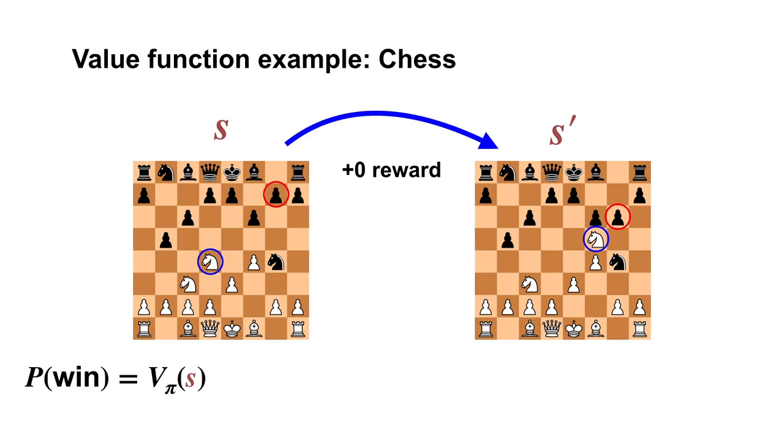Note, the value of state s' is lower than the value of state s. This means we are less likely to win the game from this new state, assuming we continue following policy π.